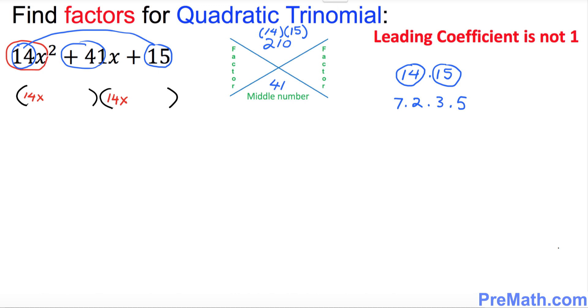So far so good. Now I want you to look at this thing over here. I want you to multiply these two numbers. 2 times 3 is 6 and 7 times 5 is 35. So we have these two factors, 6 and 35.